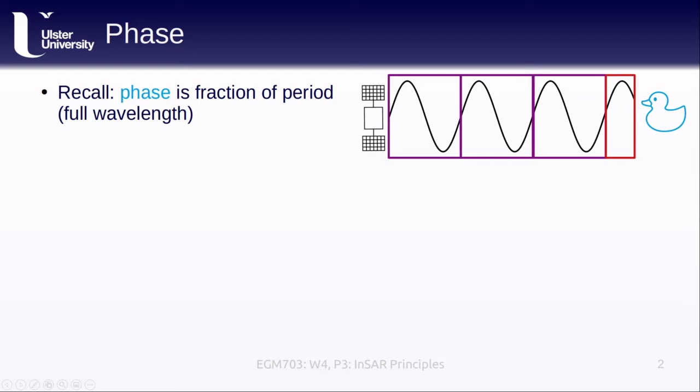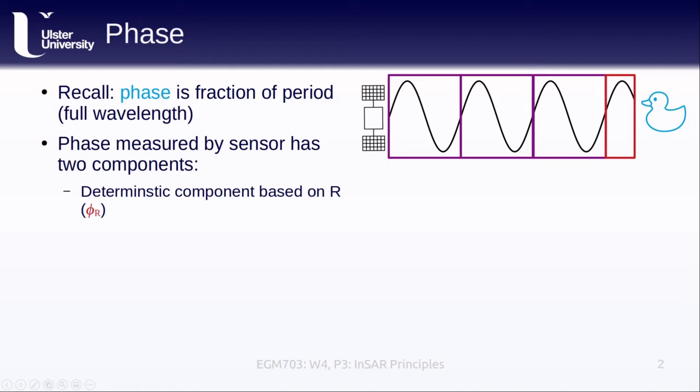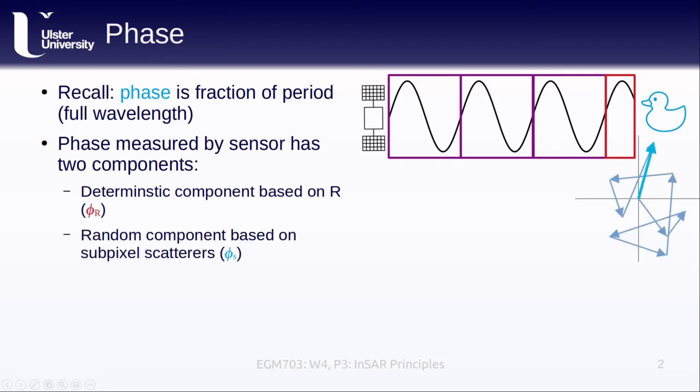The phase that is recorded by the sensor has two different components. The first is a deterministic component based on the range R between the sensor and the target. This is effectively the bit that's left over after we divide the range by the wavelength. The second component is the random component based on the contributions from all of the different subpixel scatterers and this is the part that changes based on the surface conditions.